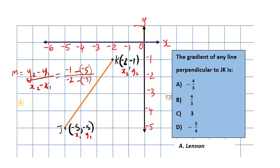When we subtract a negative, we get positive. So the numerator is negative 1, and subtracting negative 5 gives positive 5 — so negative 1 plus 5. The denominator is negative 2, and subtracting negative 5 gives positive 5 — so negative 2 plus 5. Negative 1 plus 5: the signs are different, we find the difference which is 4, keeping the sign of the larger, so positive 4. Same for the denominator: the difference is 3. So the gradient is 4 thirds.